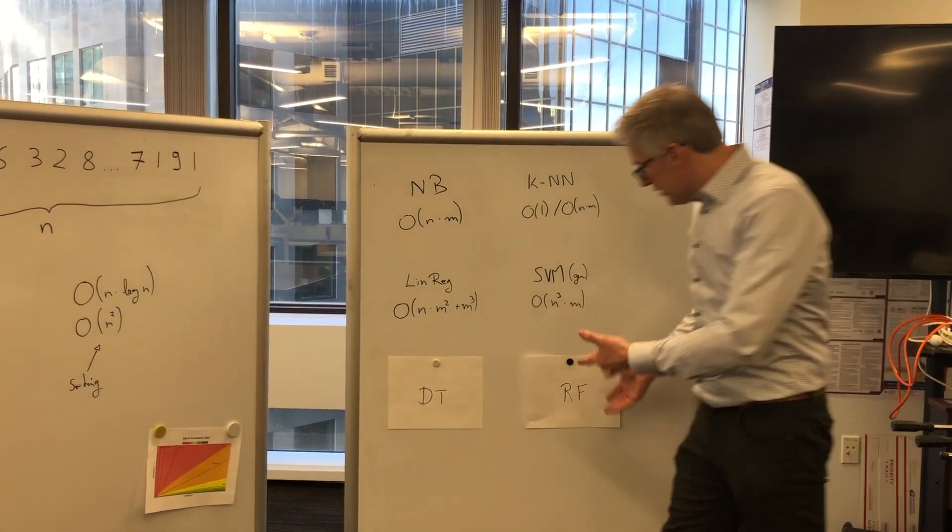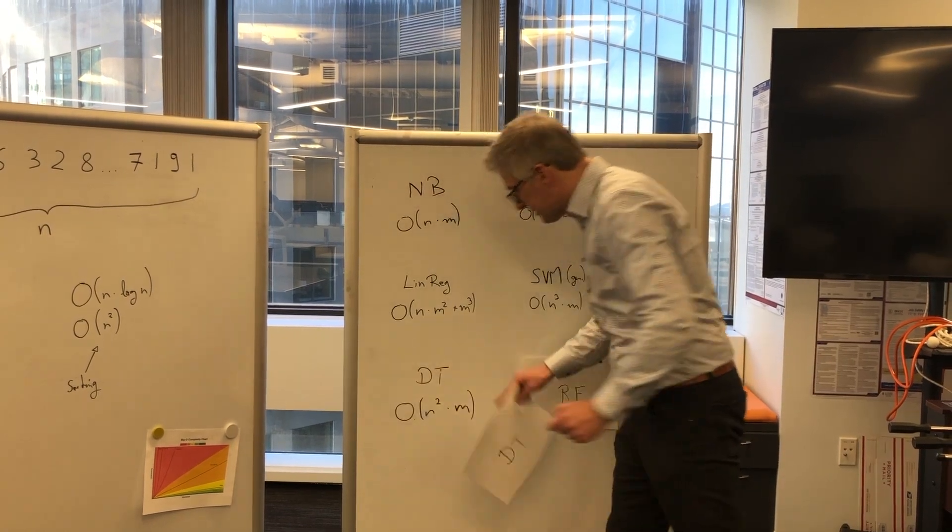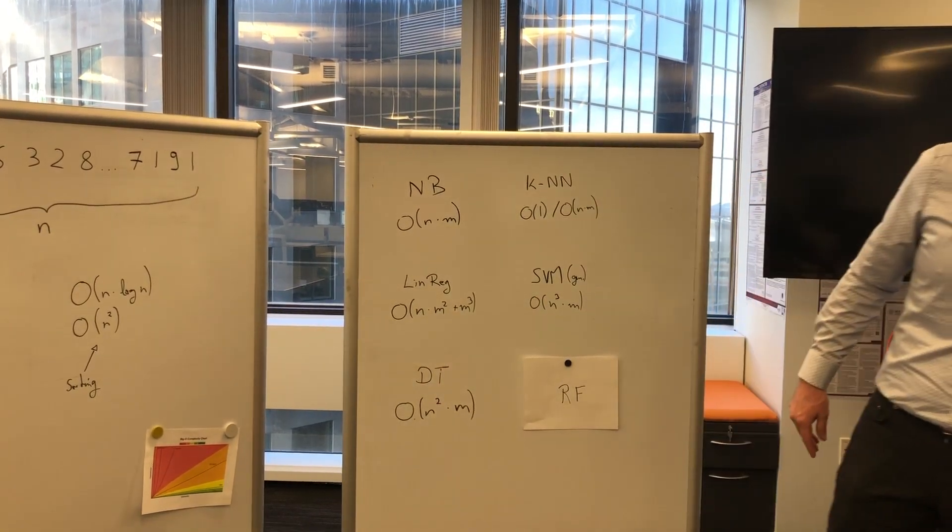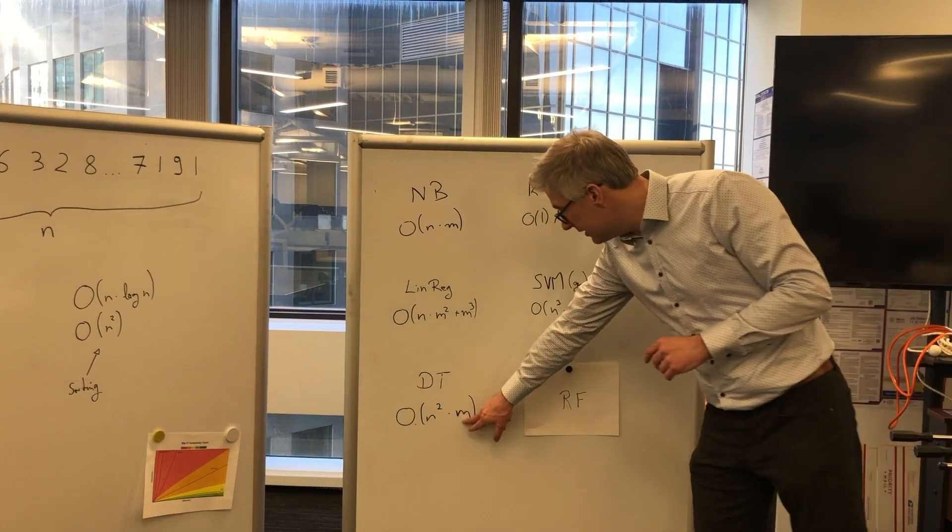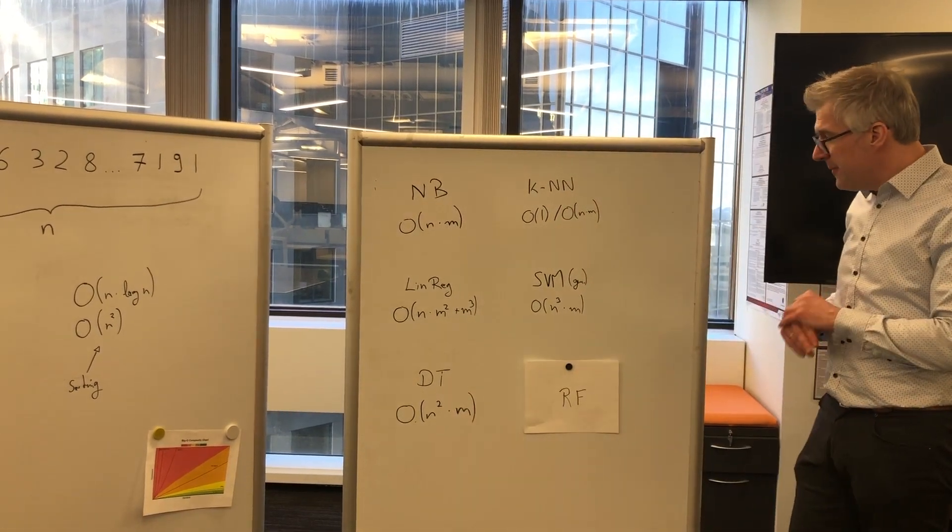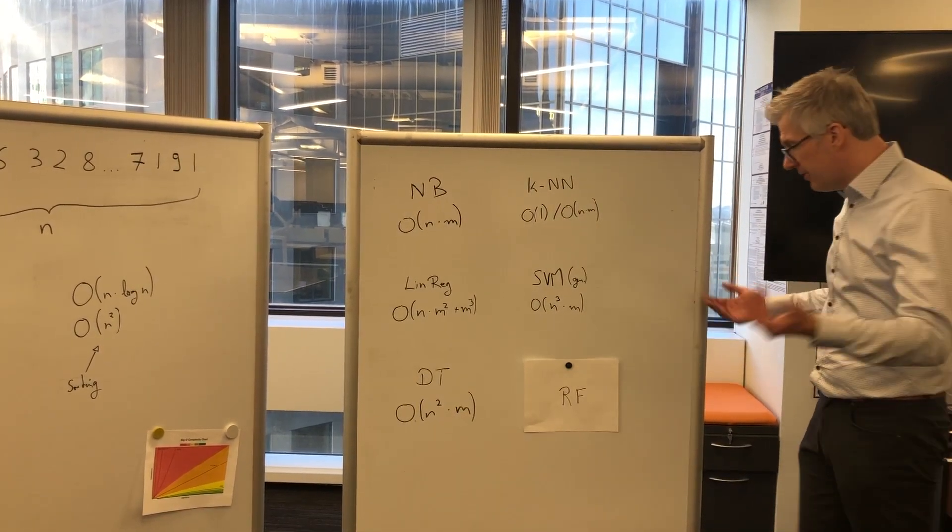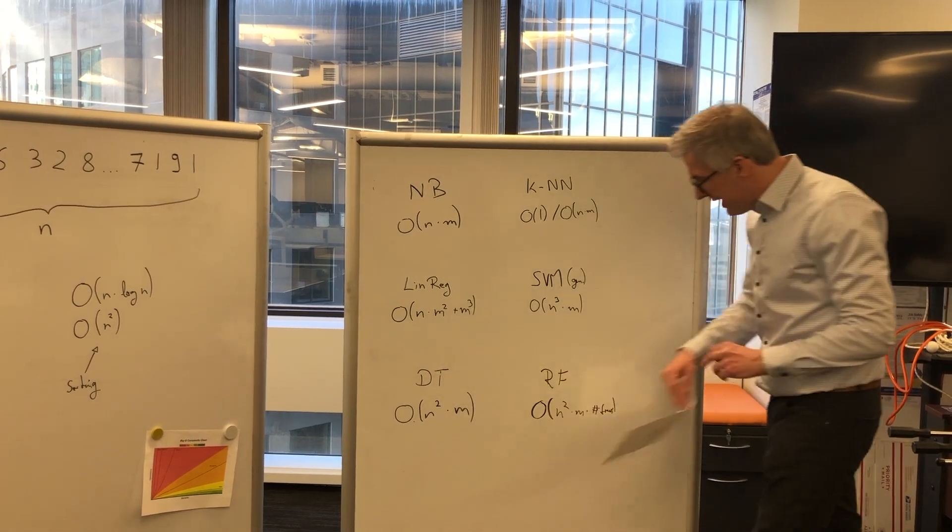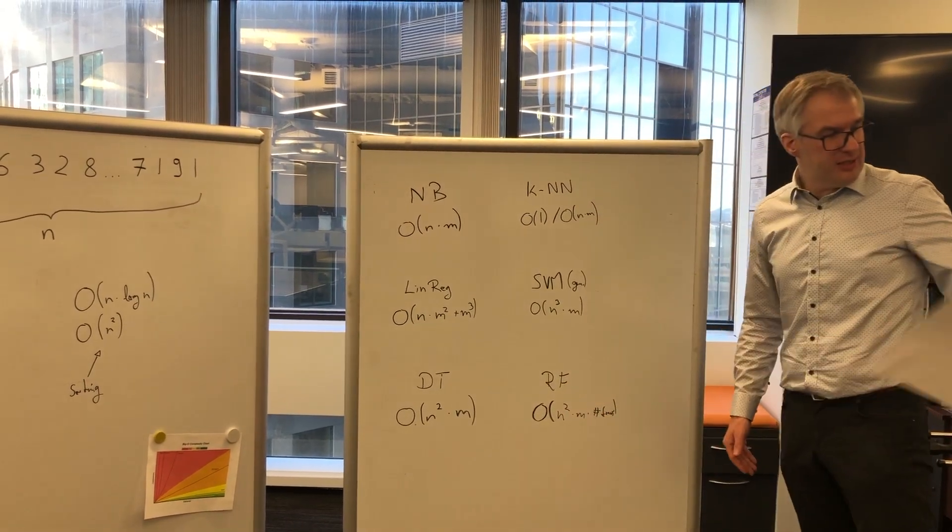Now let's go to the tree-based algorithms. Decision trees are quadratic in runtime for the number of rows and linear in the number of columns. Well, if you have multiple trees, like in random forest, for example, you have the same for every single tree times the number of trees.